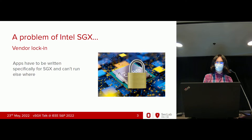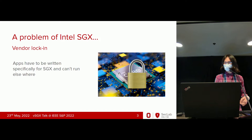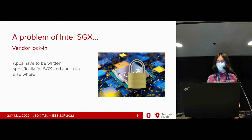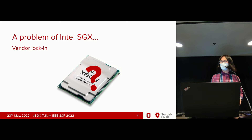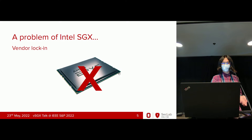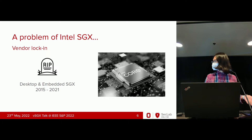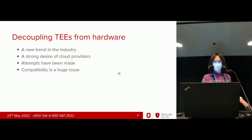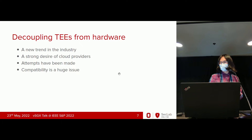But SGX suffers from a problem we call vendor locking. Basically, your app has to be written in binary form to call those SGX instructions, and it has to be written specifically for it — you can't just run it elsewhere. Before the third-gen Xeon Scalable series, you can't run this in the cloud because Xeon server chips don't support it. And you obviously don't run it on EPYC. And we also have to note that Intel has ditched desktop embedded SGX since the 12th-gen Core.